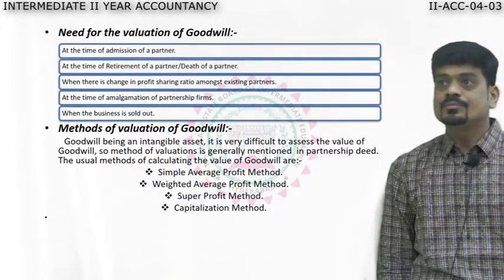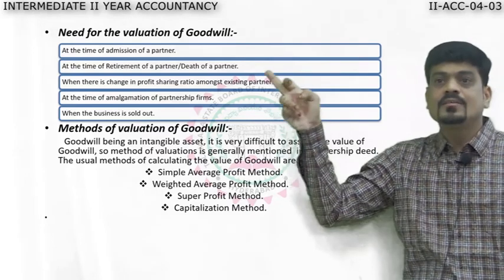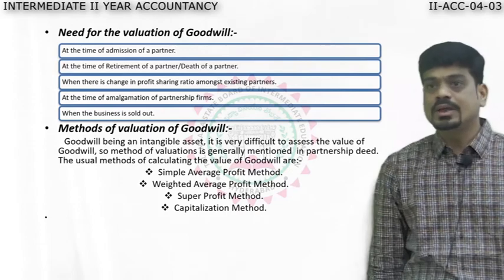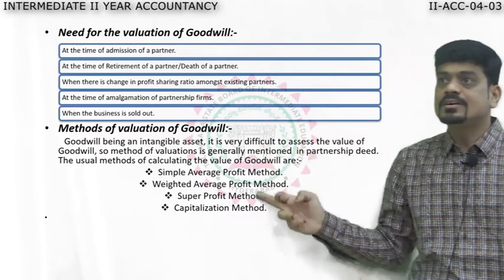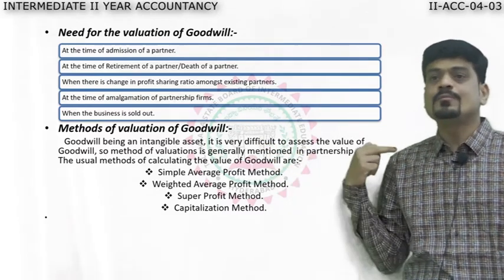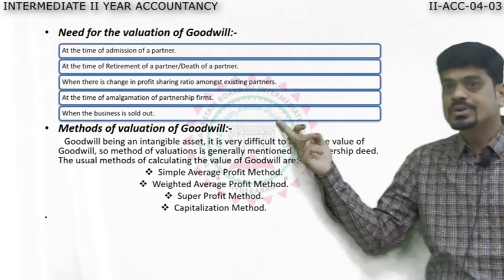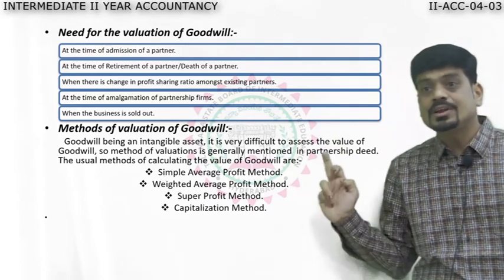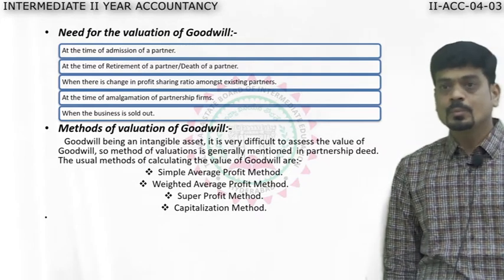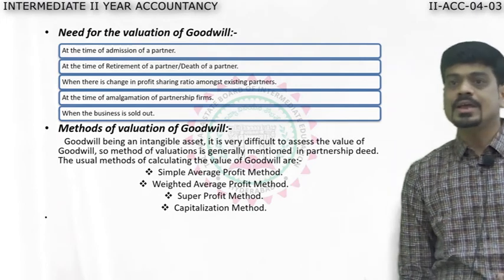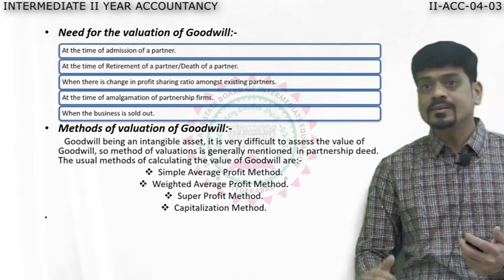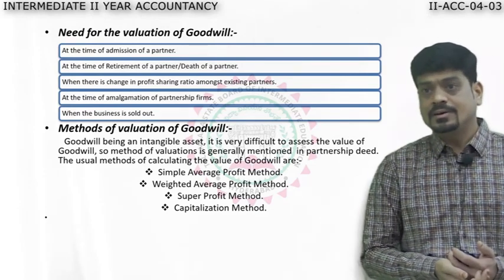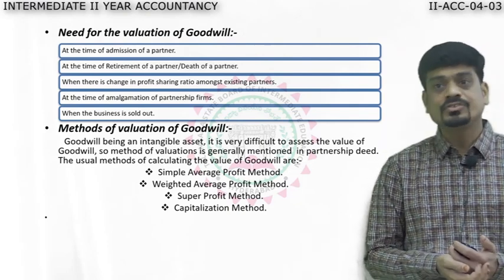The need to value goodwill arises during admission of a partner, retirement, death, change in profit ratio, or when two partnership firms merge together. There are various methods of valuation of goodwill. In the next session, I will cover problems on the simple average profit method along with the treatment for goodwill. Revise the journal entries taught today with regards to the revaluation account, so that when we do the problems, it will be easy to solve. We will meet in the next session. Stay safe, stay at home. God bless you all.